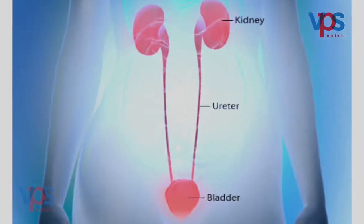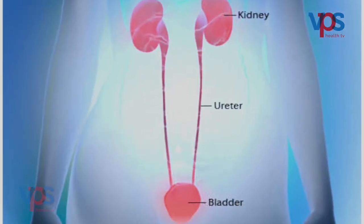Urinary system diseases are treated by a urologist or genitourinary surgeon. These diseases can occur in two ways: either from birth, which is called congenital disease, or the second type is acquired disease.